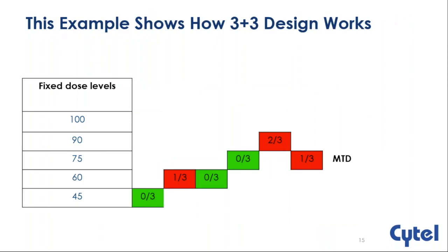Here's a simple 3+3 example with five dose levels. You start at 45 mg with no DLT, move to 60 mg where you see one DLT, add three more patients with no additional DLT — so one out of six, allowing escalation to 75 mg. At 75 mg nothing happens, then you see two out of three DLTs at the next level. You come back down, test 75 mg with three more patients, see one out of three DLTs, and with six total patients and ≤1 DLT, you declare MTD at 75 mg.